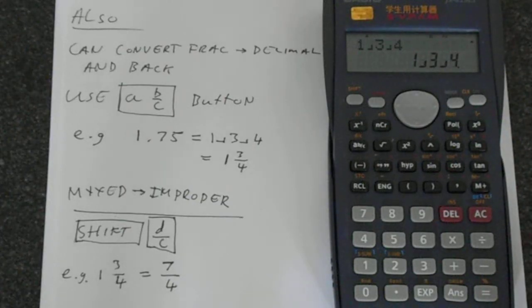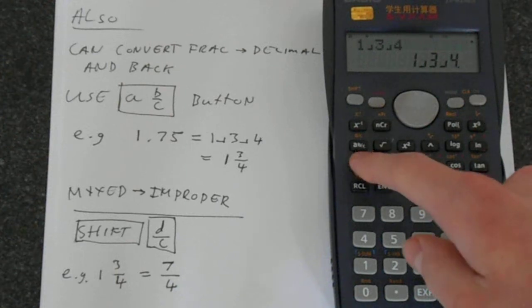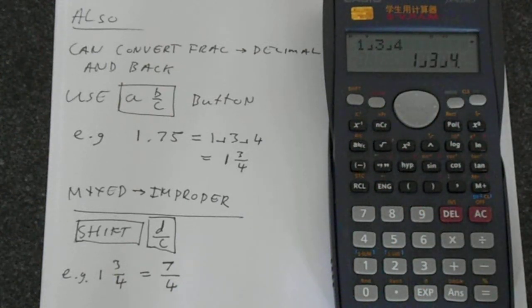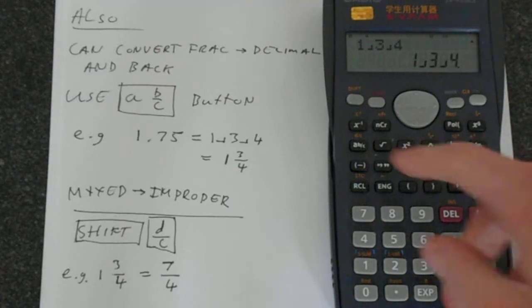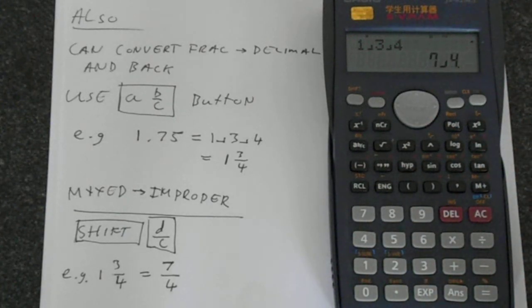Equals to put that into the memory. If we press Shift and then this D over C button, it's converting from A times B over C into just D over C. It's effectively combining A and B. So pressing Shift, D over C, that tells us that is 7 over 4.